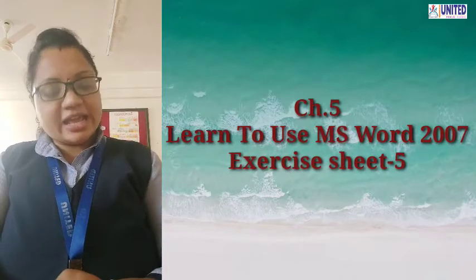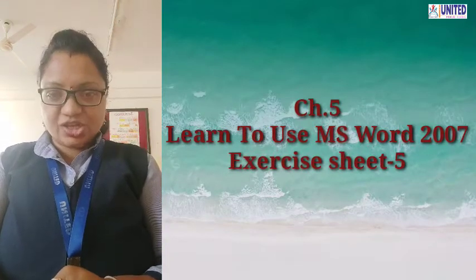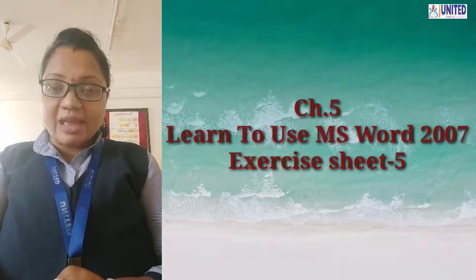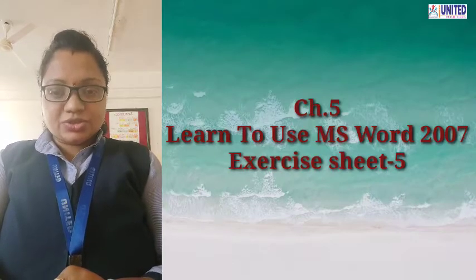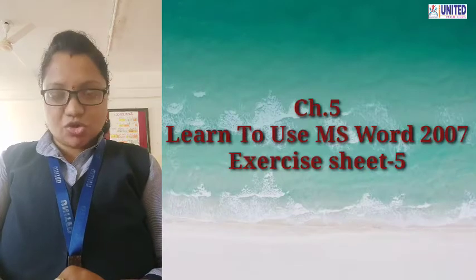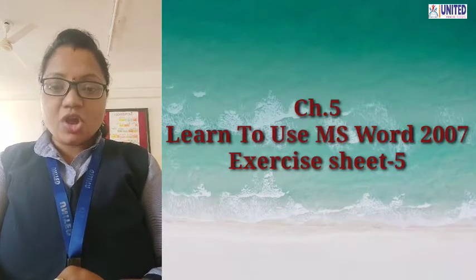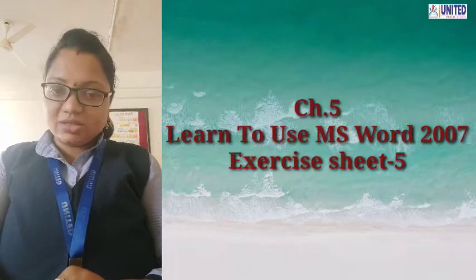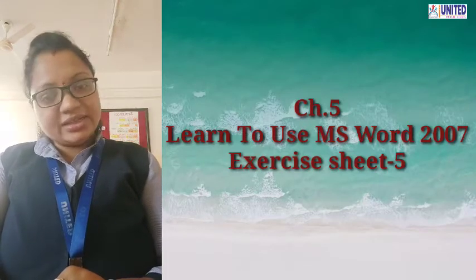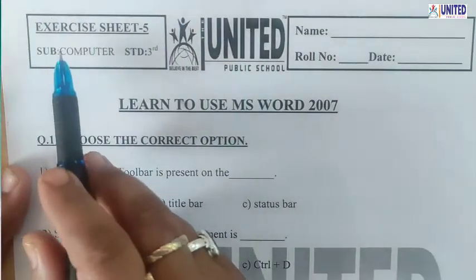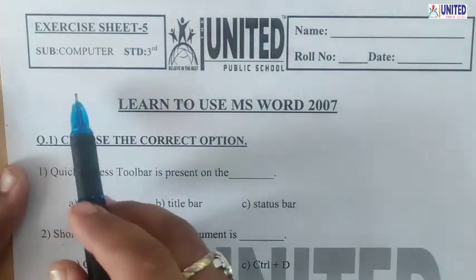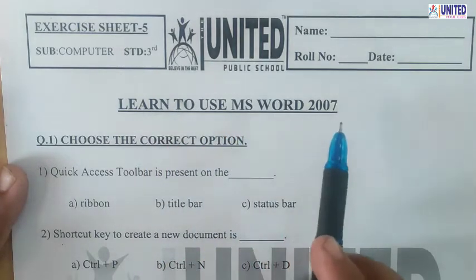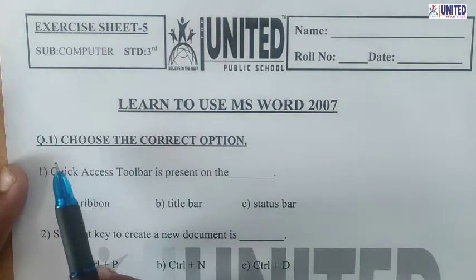Hello students, as you know, we are finishing our chapter number 5, Learn to Use MS Word. So today we are going to solve the exercise sheet number 5 of that chapter. Exercise sheet number 5, Computer Standard 3rd, chapter name is Learn to Use MS Word 2007. Let's start.